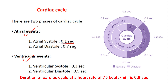The total duration of one cardiac cycle is 0.8 seconds. This 0.8 seconds is divided into various atrial events and ventricular events. Atrial events include atrial systole of 0.1 second and atrial diastole of 0.7 second.